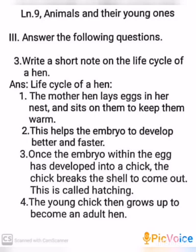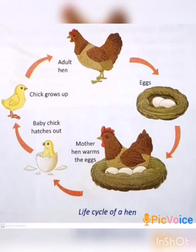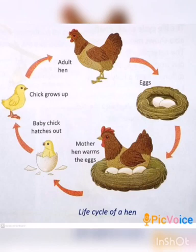For this answer you also have to draw the diagram. Draw the diagram on the opposite side of the text page, simply and neatly. The cycle starts with the adult hen, then the adult hen lays eggs.